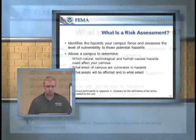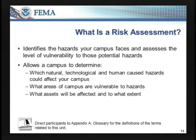So what is a risk assessment? It helps you identify the hazards that your campus faces and helps you assess the level of vulnerability to those hazards — natural, human cause, or technological. It also allows the campus to determine which hazards could affect your campus and which areas are most vulnerable. For example, if you have laboratory buildings or clinical space, hazmat would be most vulnerable to those areas, whereas in an academic space it wouldn't be as much because you don't have those hazardous materials there. Also, what assets will be affected and to what extent?